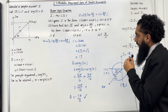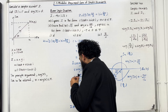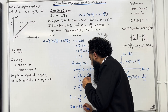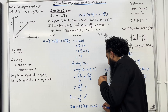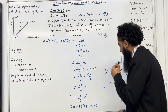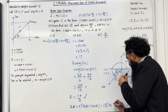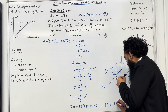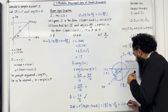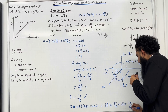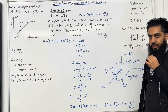So zw = 18(cos(−7π/12) + i sin(−7π/12)). This completes part B, part 2 of the exam-style question.